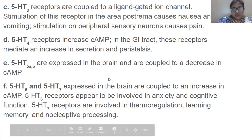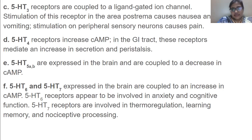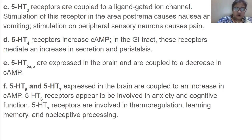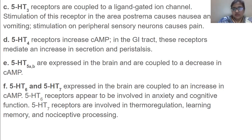5-HT3 receptors are linked to ligand-gated ion channels. Stimulation of this receptor in the area postrema causes nausea and vomiting, and stimulation on peripheral sensory neurons causes pain. 5-HT4 receptors increase cAMP level and in the GIT mediate an increase in secretion and peristalsis. 5-HT5 receptors are expressed in the brain and are coupled to a decrease in cAMP level.